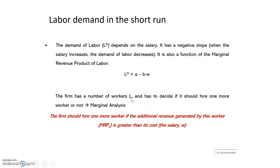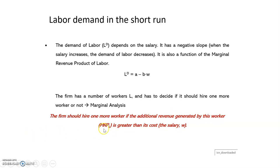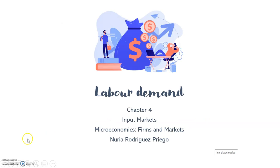The firm will hire one more worker if the additional revenue generated by that worker — the marginal revenue product of labor — is greater than its cost. The cost of hiring one more worker is exactly the salary, the wage. So the marginal cost of hiring one more worker equals the wage, and the additional revenue generated is the marginal revenue product of labor.